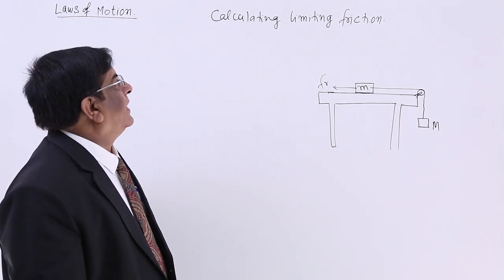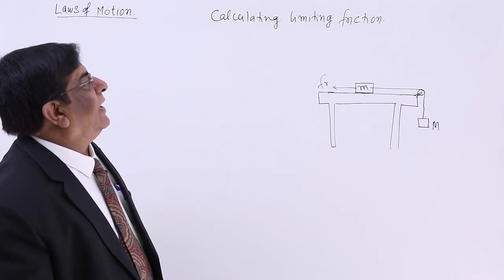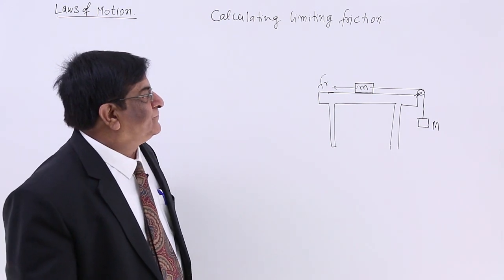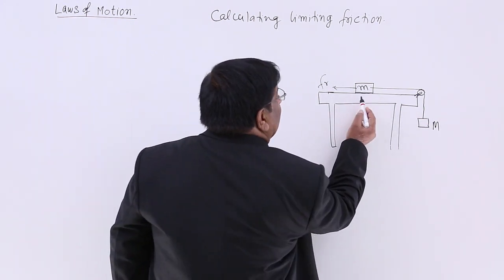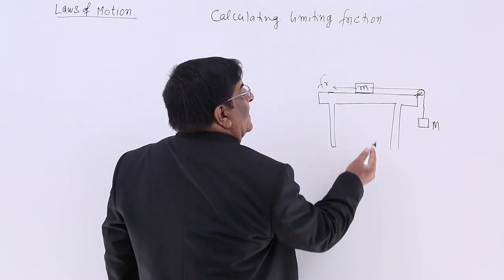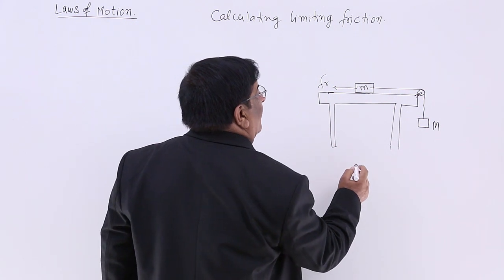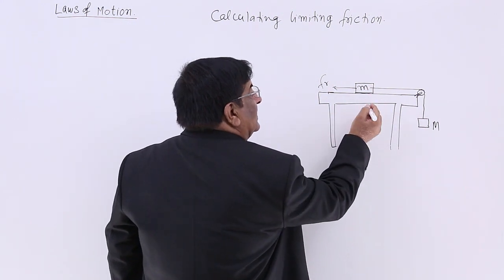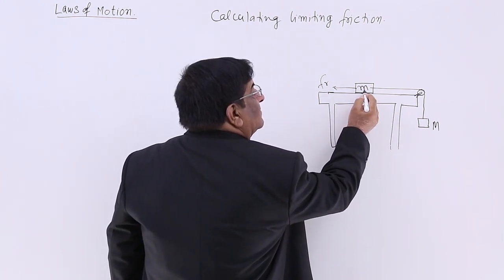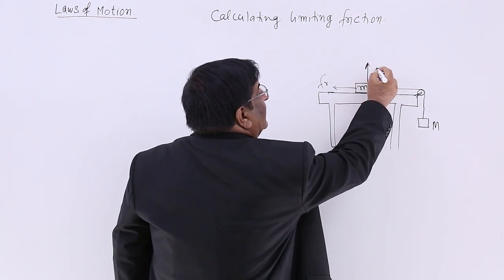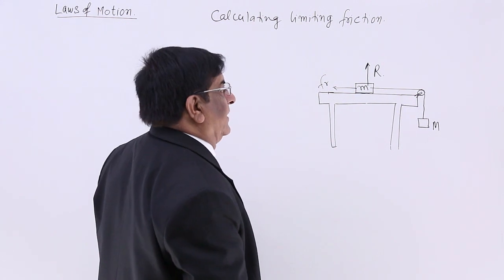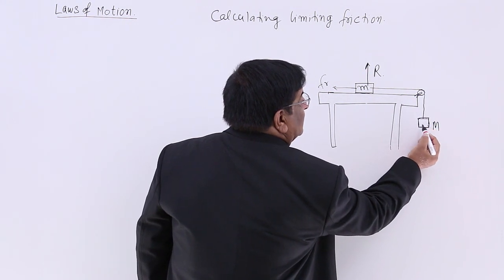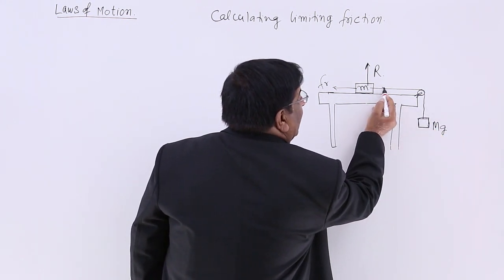Here is how we are going to calculate the limiting friction and how we are applying the knowledge of limiting friction in our life. This is a box which we need to slide on this surface. It has got mass M, and as we remember, it is pressing this surface, creating a reaction. This surface is pressing this body upward with a normal reaction R. Now we are applying a force with the help of this mass — how much is that force? Mg, applied in this direction.